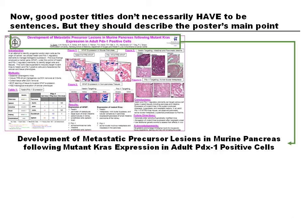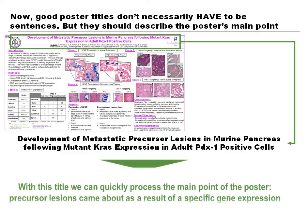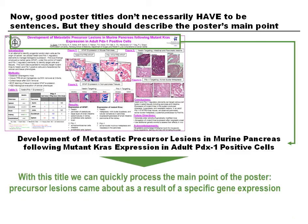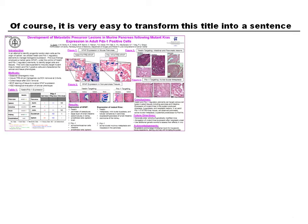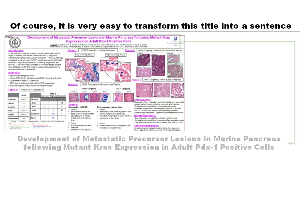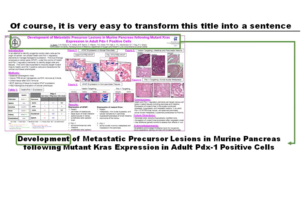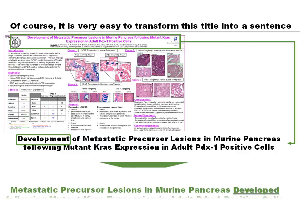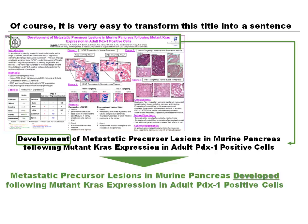With the message title we know the subject and main point of the poster. For example, a title about the development of metastatic precursor lesions following mutant KRAS expression in adult PDX1-positive cells allows us to quickly process the main point — that precursor lesions came about as a result of specific gene expression. It's easy to transform this title into a sentence: simply change the word 'development' to a verb. The revised sentence reads: 'Metastatic precursor lesions in murine pancreas developed following mutant KRAS expression in adult PDX1-positive cells.' We'll leave it to you to decide which of the two titles is best.